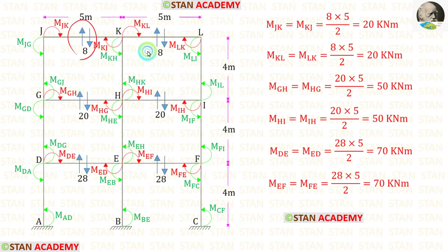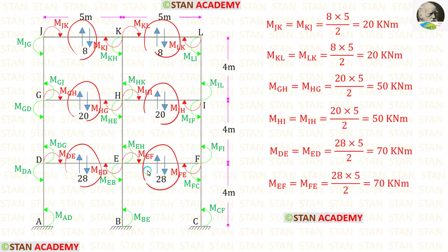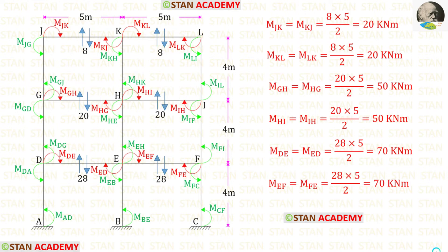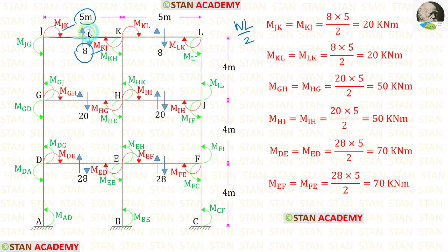Now, using the shear forces we have just calculated, we can find all of the moments in this frame. We can find the moments in the beams by using the formula W·L/2. First, let us take member JK. Here we have the moments MJK and MKJ. In this member W is 8 and L is 5. Finally, for MJK and MKJ we are getting 20.